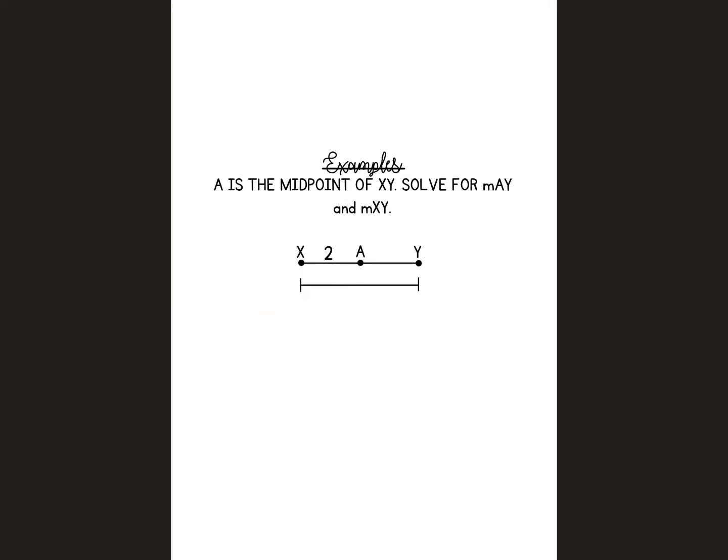Here's our first example. It says A is the midpoint of XY. If it's the midpoint, so if A is directly in the middle, we know each part is the exact same length. So AY is also 2, and then that means the entire thing would be 4.